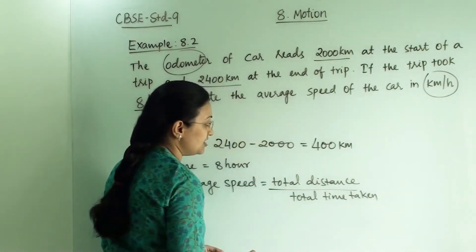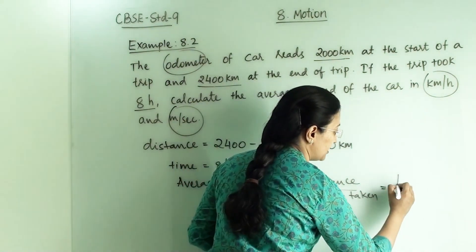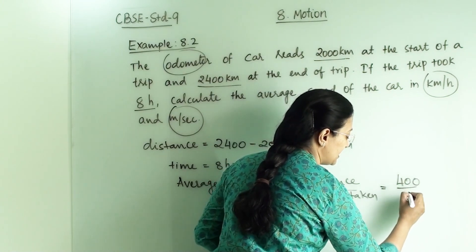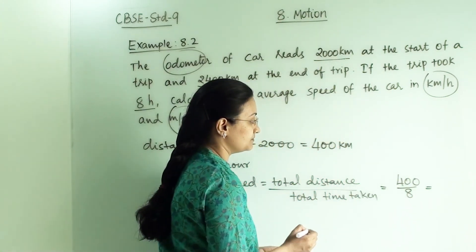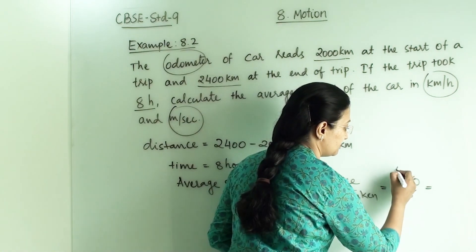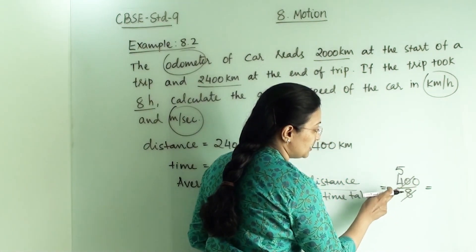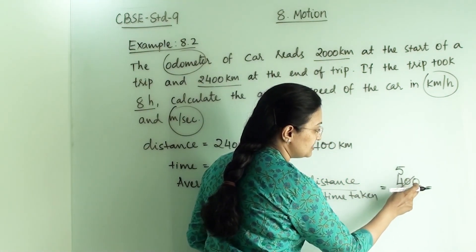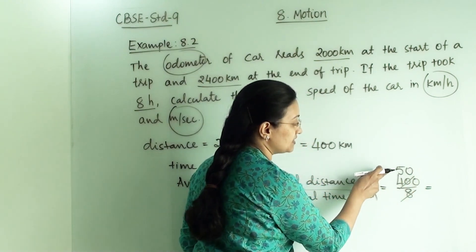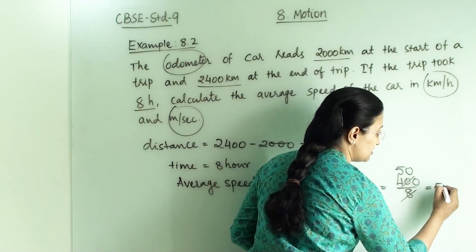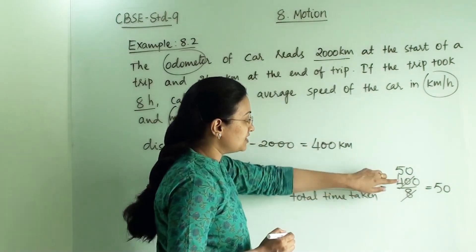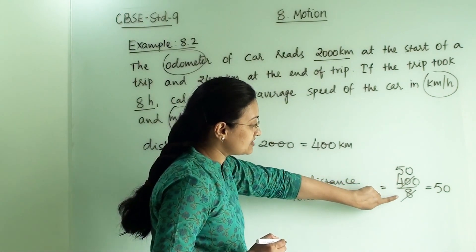So here we will get 400 divided by 8 and the answer will be 50. 5 into 8 is 40 and this 0 we are keeping here, so it is 50 km per hour.